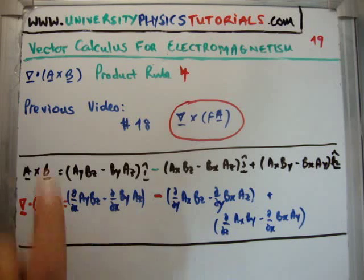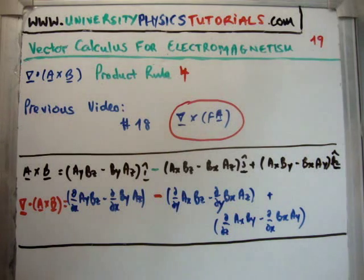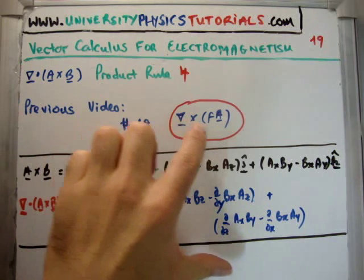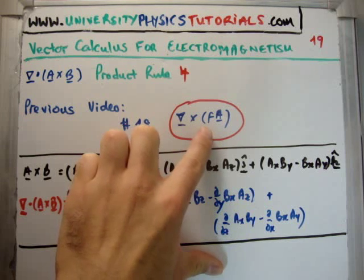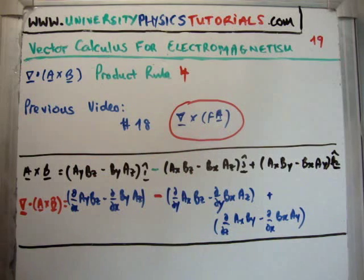I'd like to draw your attention to my website universityphysicstutorials.com. The previous video to this is number 18 where I discussed how to get the curl of a vector field made by multiplying the scalar f by the vector field a.